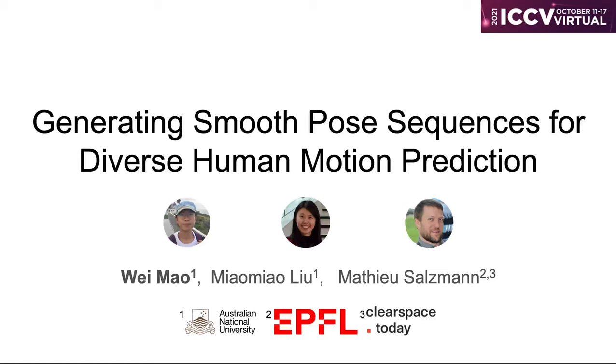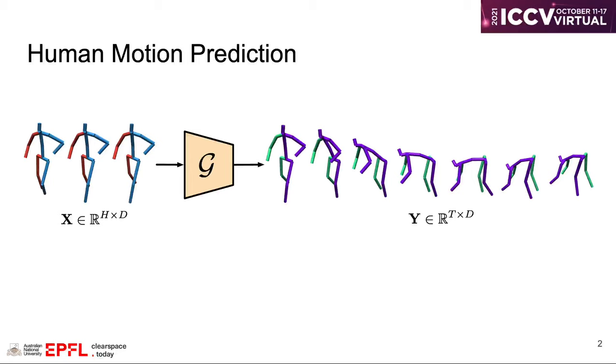Hi, my name is Wei from ANU. I will introduce our work Generating Smooth Pose Sequences for Diverse Human Motion Prediction. This is a joint work with MiaoMiao and Matthew.